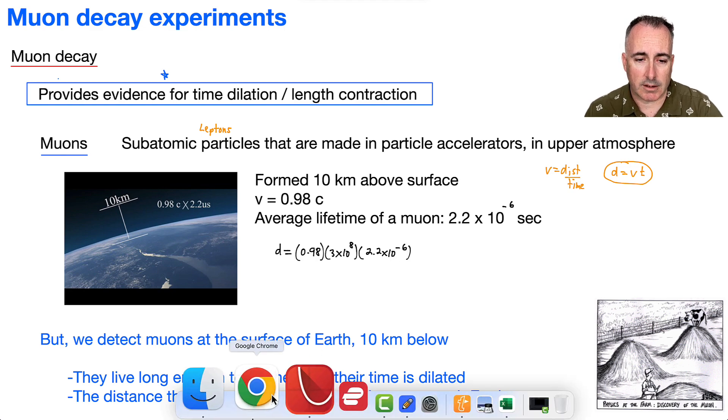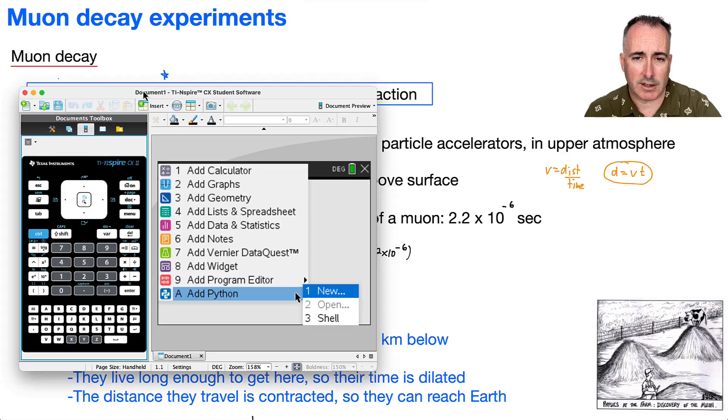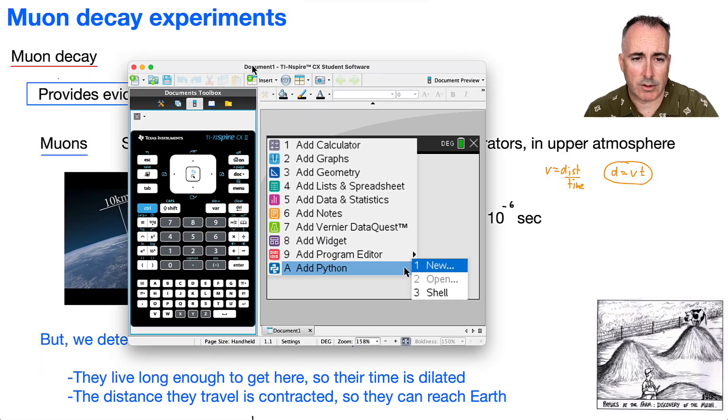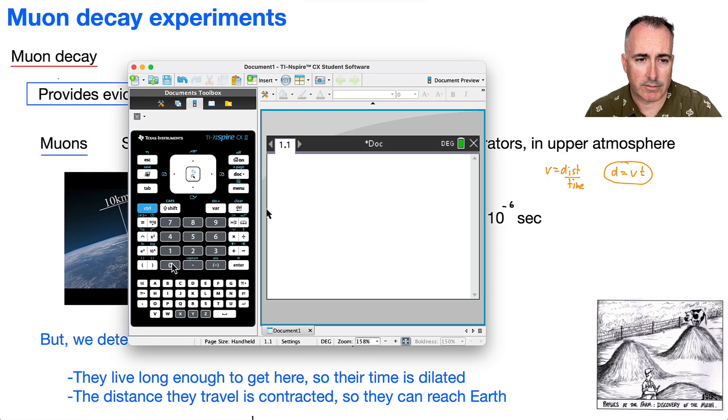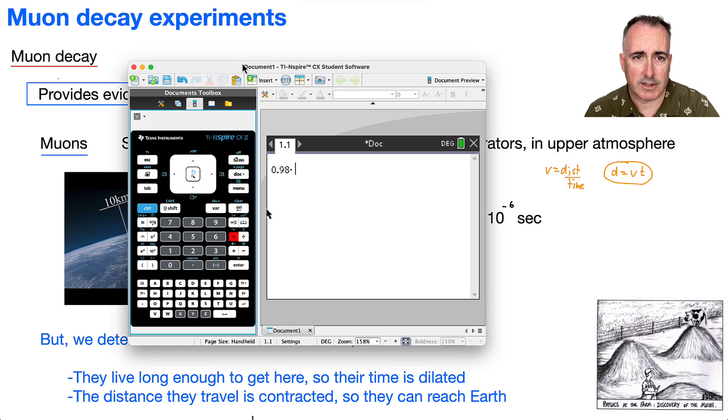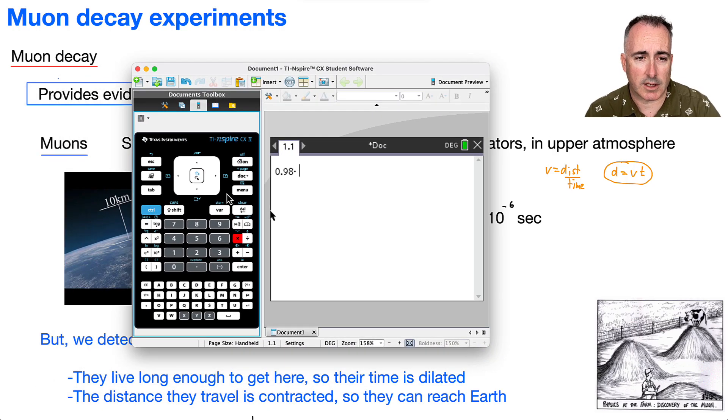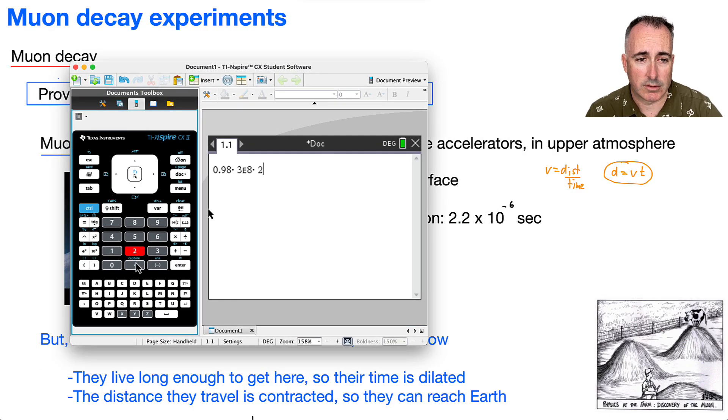I'll do this on my calculator and let's see what we get. So I want to go 0.98, I'll do that first. All that times 3 times 10 to the 8, and all that times the lifetime which is 2.2 times 10 to the power of minus 6. If I do this, I get like 646.8 meters, so around 650 meters.